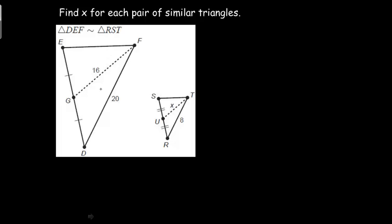On this one they give us the length of FG is 16, the length of FD is 20, the length of TU is x, and the length of TR is 8.